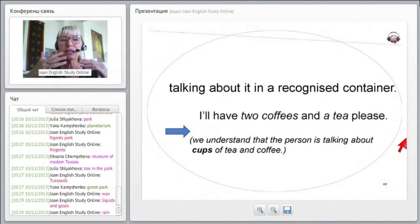This means it's implied that it's two cups of coffee and a cup of tea. So we understand. So we can make it countable by cups of tea, cups of coffee, glasses of water.